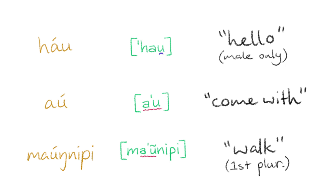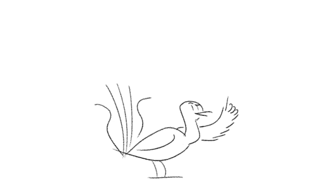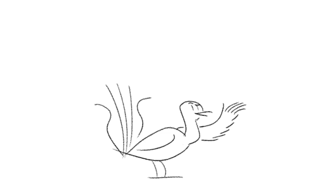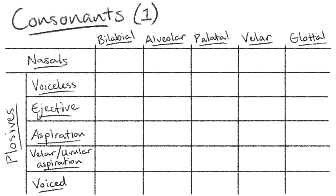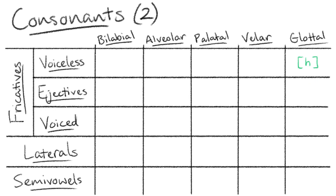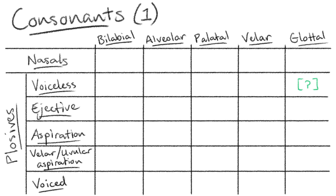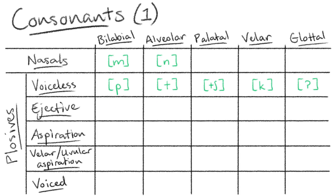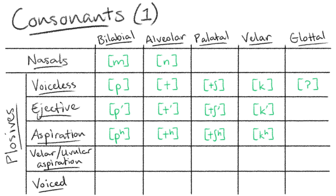Every other time vowels occur next to each other, they are pronounced as individual syllables. Now, there are so many consonants in Lakota that I had to split the phonemic chart into two sections. There are four main places of articulation, plus two glottal consonants — a stop and a fricative. There are two nasal consonants, the bilabial and the alveolar, and four stop consonants for all main places of articulation with five distinct variants. All four have voiceless, ejective, and regular aspirated variants.